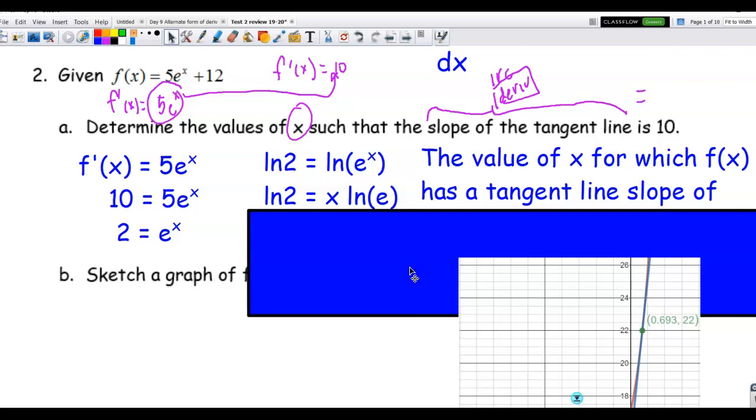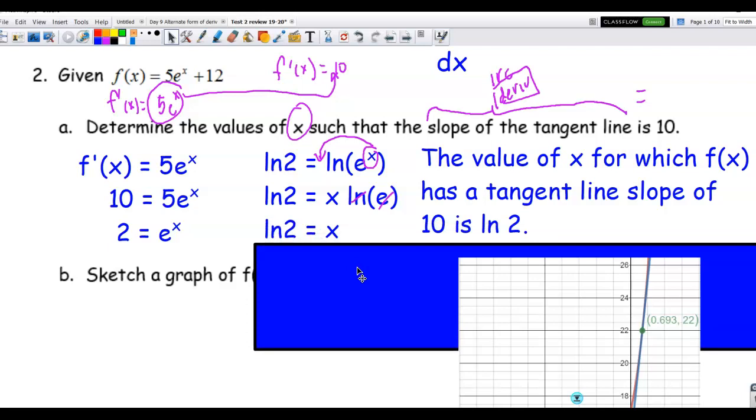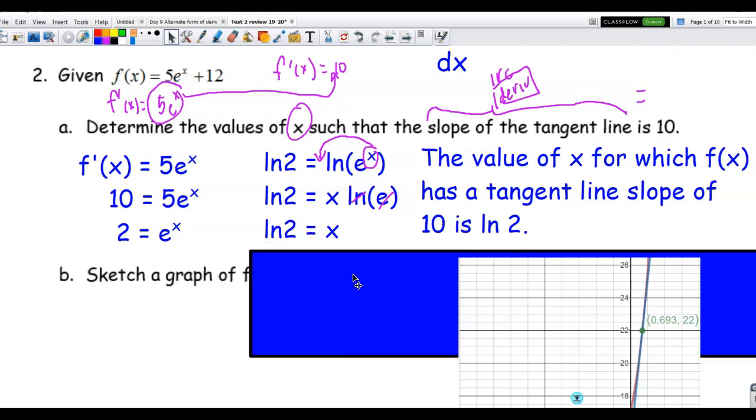Or you can use the property of exponents that allows me to bring the power of x. I'm just kind of showing it in long form. I don't really have to have this next step, that I can bring the power of x in front, and then the ln of e, ln and e undo each other. You didn't really need that step. You could go directly to the x. So x is equal to ln of 2, which is a perfectly fine number and doesn't need a calculator to estimate it. So the value of x for which f of x has a tangent line slope of 10 is ln of 2.